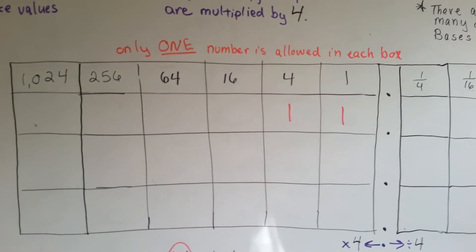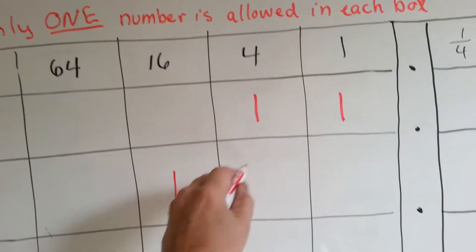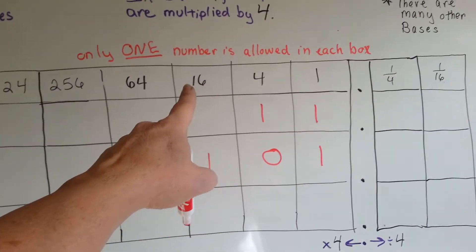Check this out. How would you write seventeen? You'd have one sixteen, no fours, and a one. That's how you would write the number seventeen.